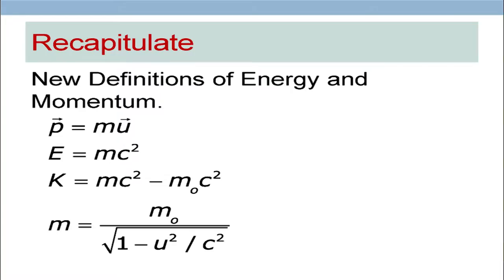So, this is what we discussed last time. We had new definitions — we redefined momentum, which we said p is equal to m times u, where u is the velocity of the particle. m is actually m0 multiplied by gamma u, which is the expression given here — this particular expression is the gamma u.